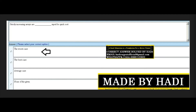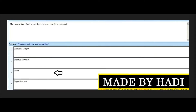This MCQ is very important. Remember the right options. Next MCQ: The running time of quick sort depends heavily on the selection of dash. Options: required output, input and output, pivot, or input data only. The right answer is the third option: pivot.